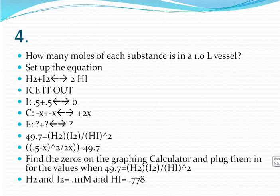So you take 49.7 set it equal to H2 multiplied by I2 all over HI squared. So into your graphing calculator you want to plug in 0.5 minus x squared all over 2x and you subtract the 49.7 over. So you find the zeros on your graphing calculator and you just plug and chug basically for the values when 49.7 is equal to H2 times I2 all over HI squared. So you should get out the hydrogen and I2 to be the same equal to 0.111 molar and the HI to come out to be 0.778.